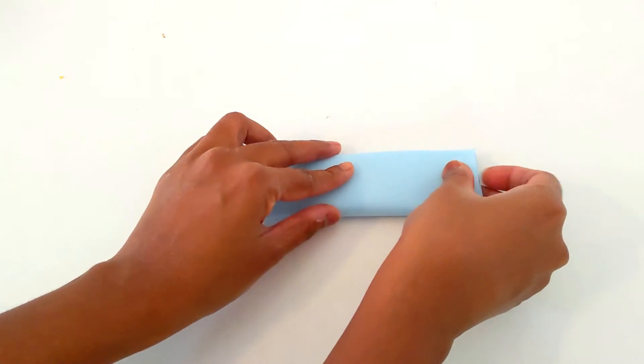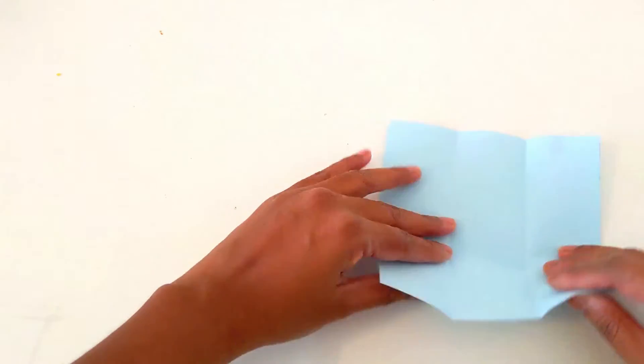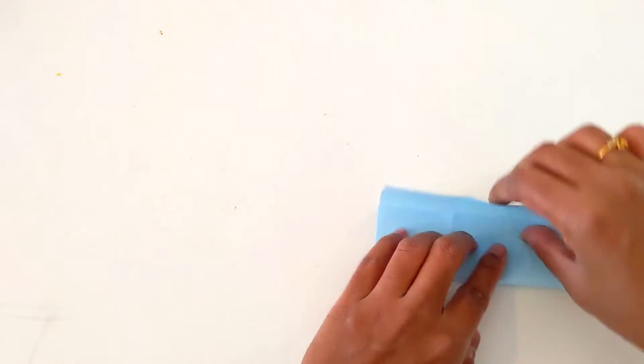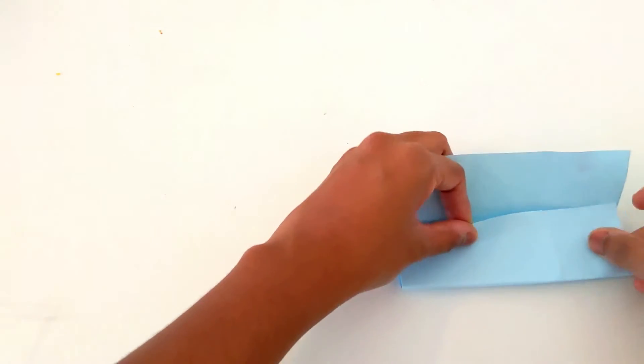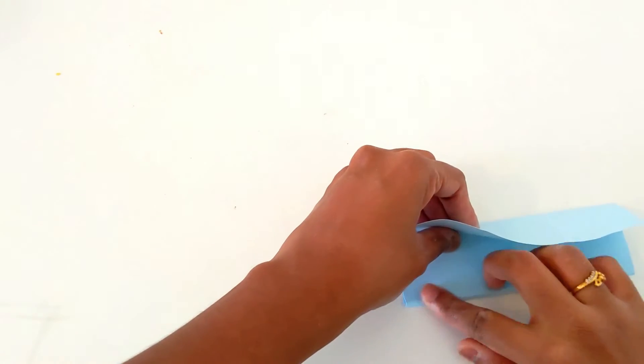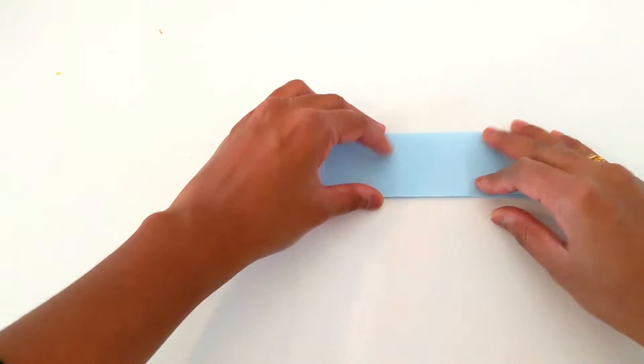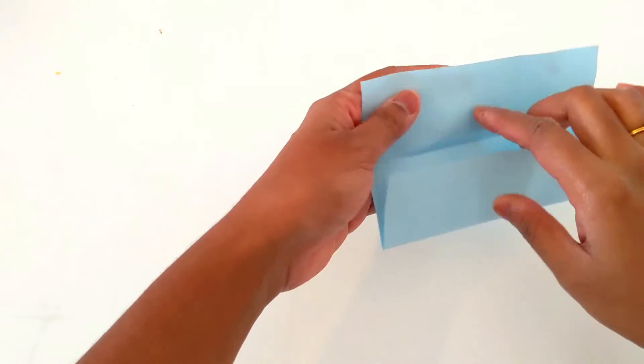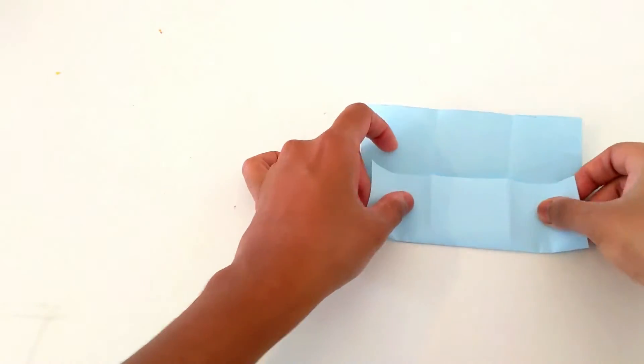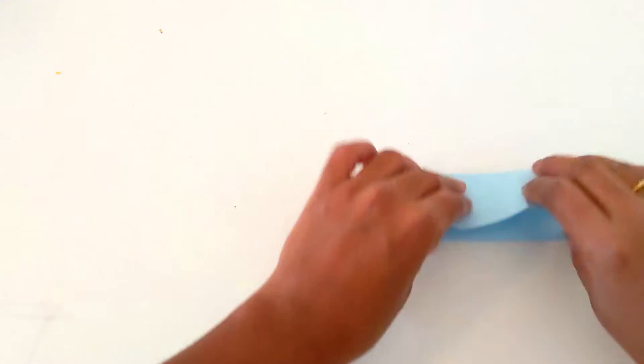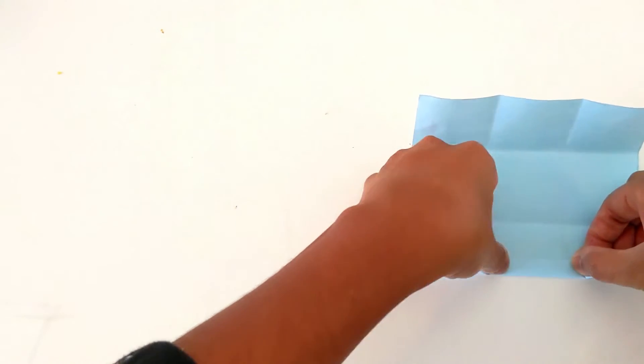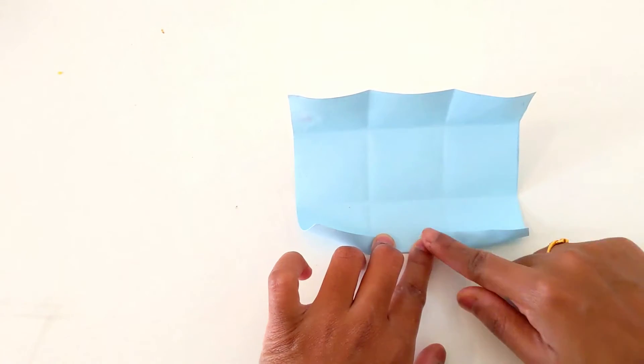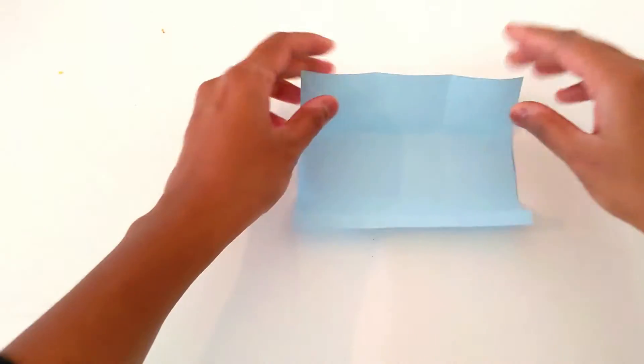Now we need to fold the blue paper like this. In the same process, the other side. On one side, fold a little bit. In the same way, the other side also.